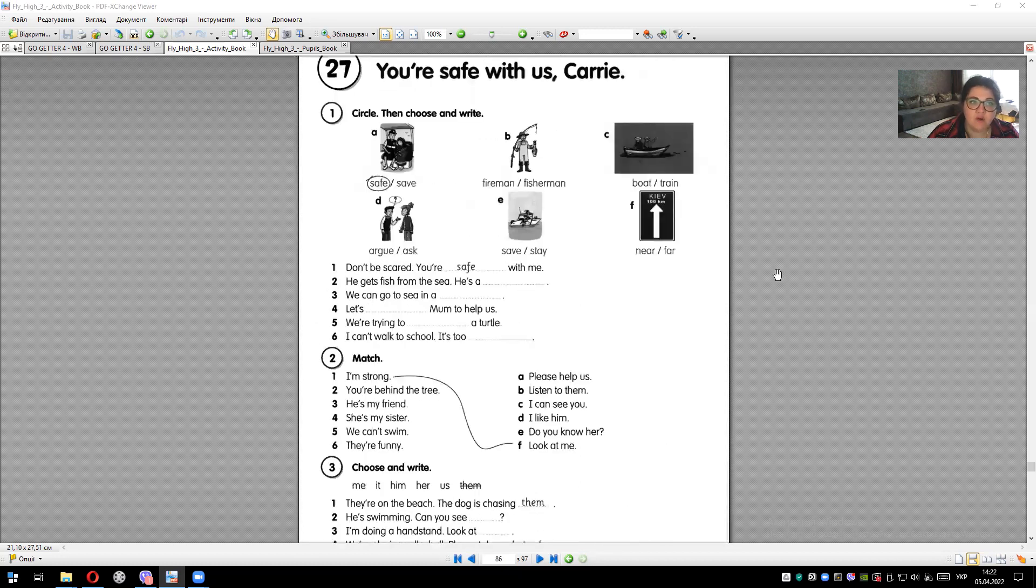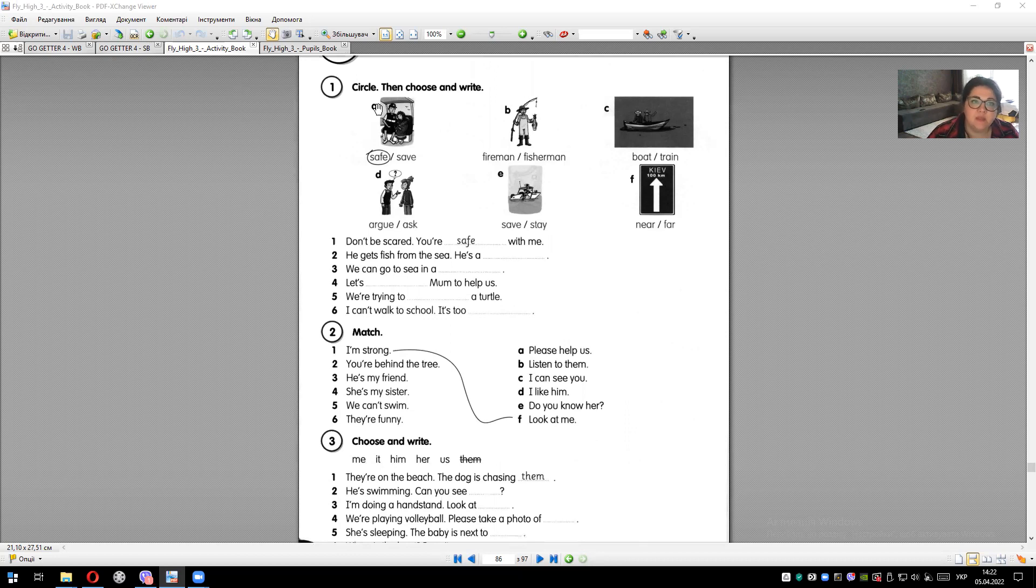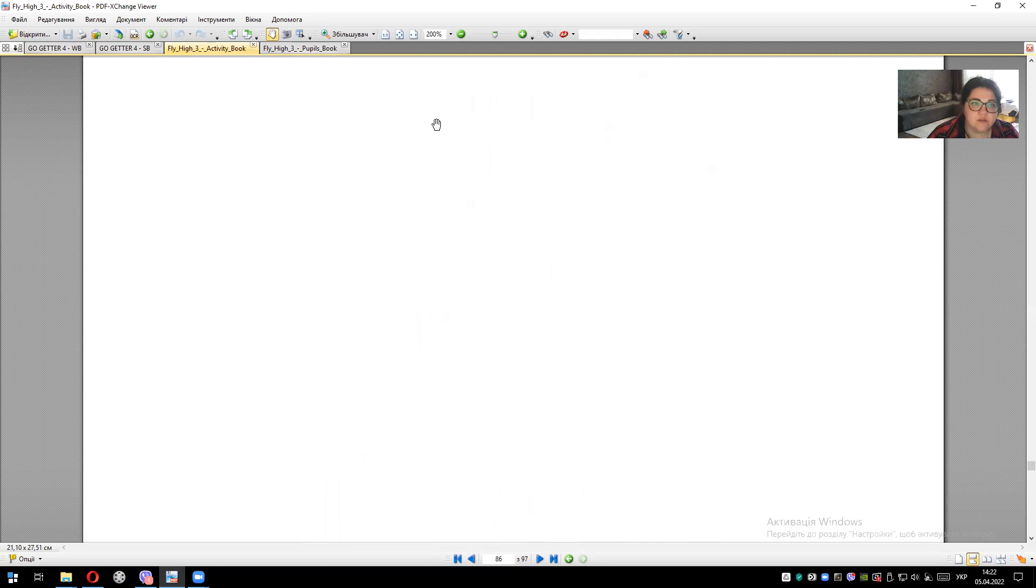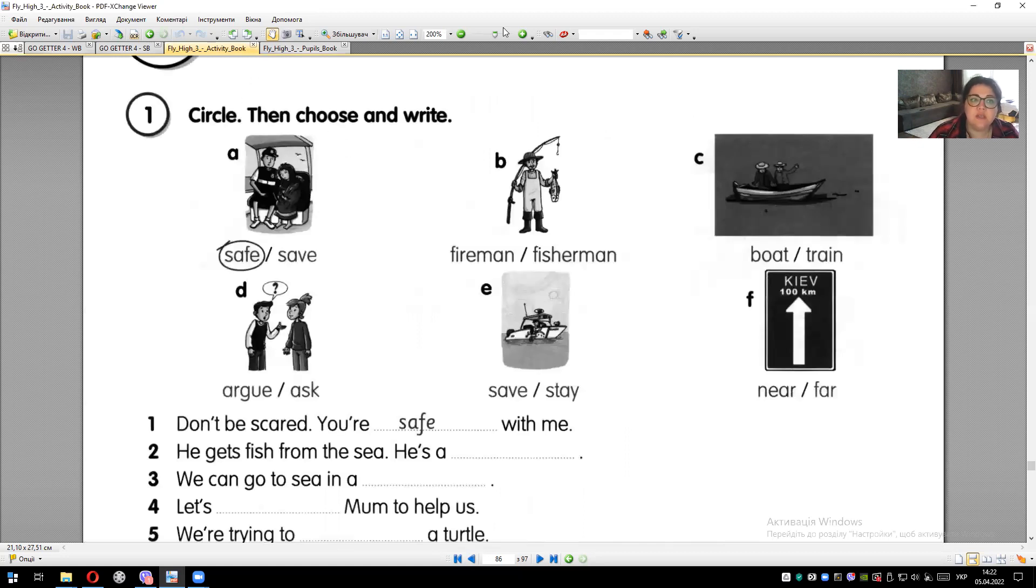So open your activity books and find these pages and let's do exercises. Exercise 1. So look here. Circle, then choose and write.